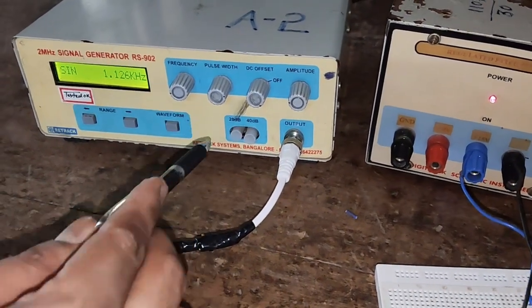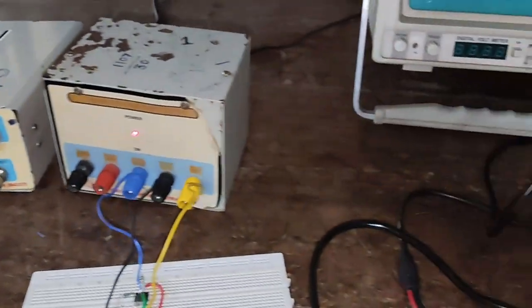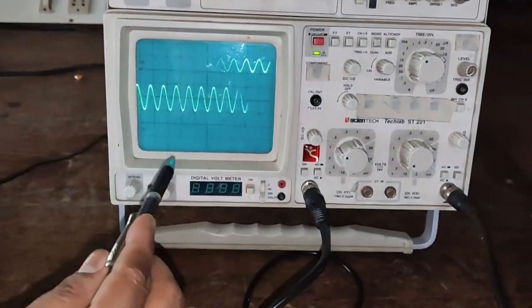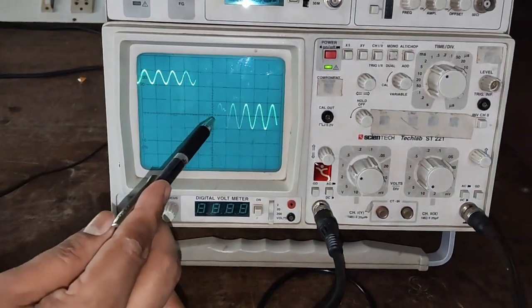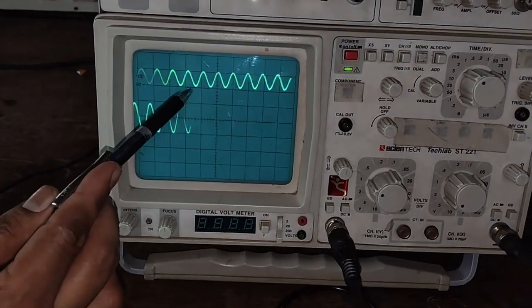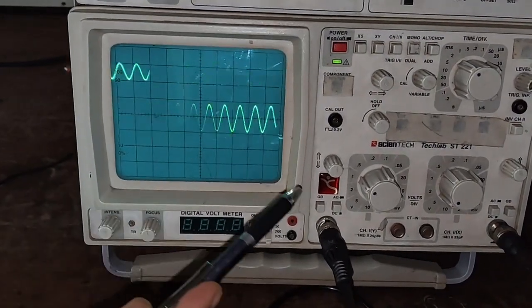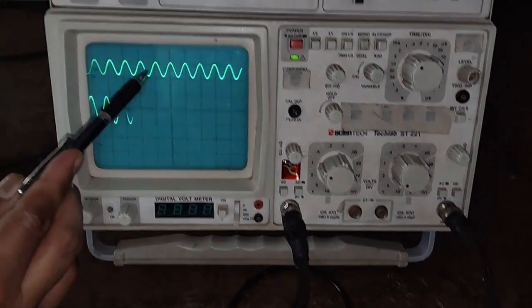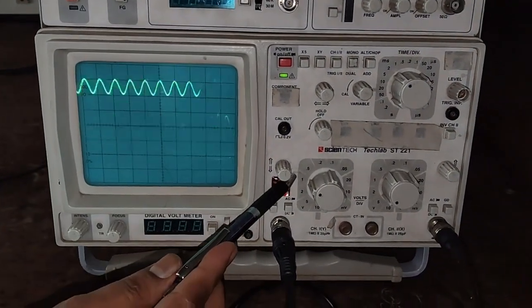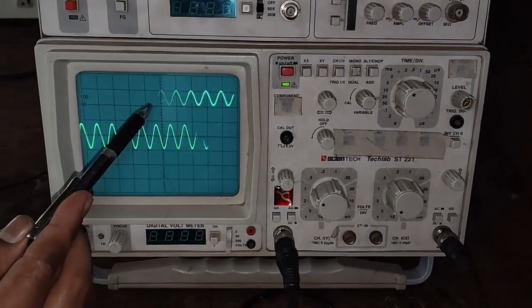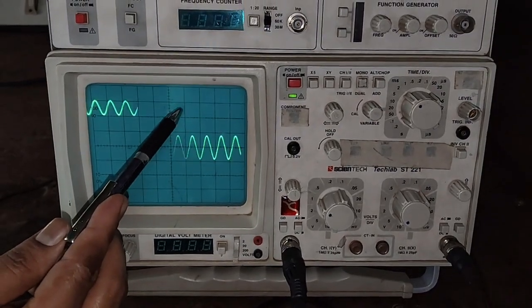This waveform can be also observed in the CRO. Here in the CRO, we can see that the input voltage here is 1 volt. The input is connected to channel 1 of the CRO. Now 1 division into 1 is 1 volt. And frequency is 1 kilohertz.